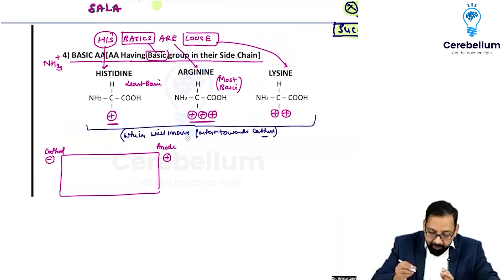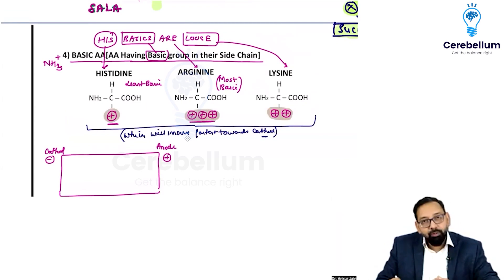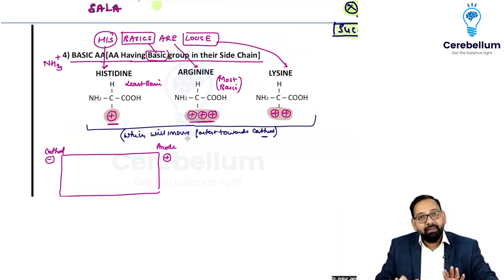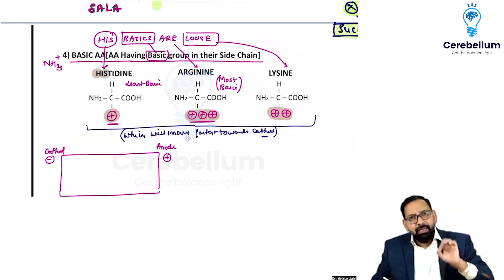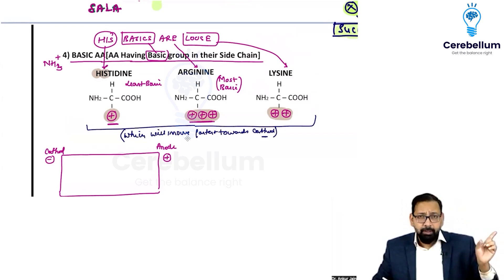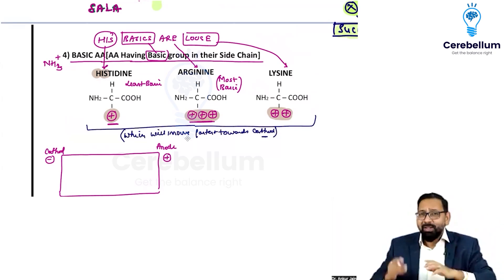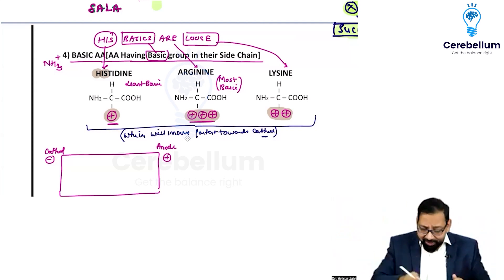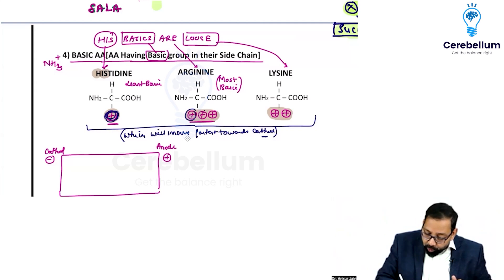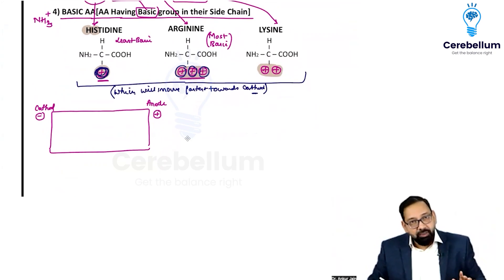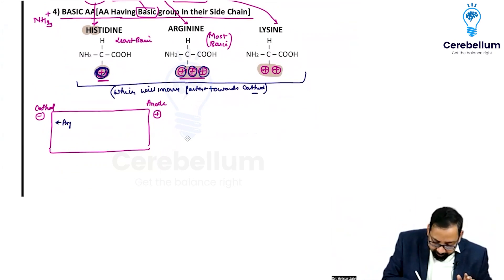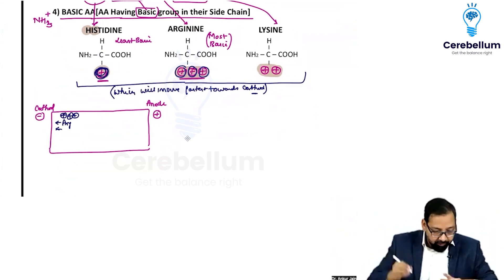Here is a mnemonic to remember the charges: in English, 'he is' refers to one person, and 'there are' refers to multiple. So histidine — 'he is' — has only one positive charge, while arginine — 'there are' — has many positive charges. So arginine will move fastest towards the cathode because it has the maximum positive charge.